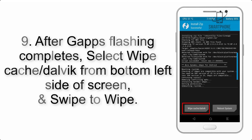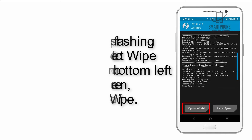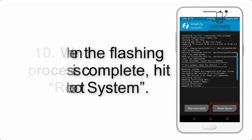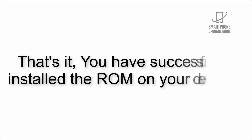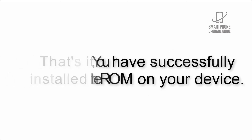Step 9: After gapps flashing completes, select Wipe Cache and Dalvik from the bottom left side of the screen and swipe to wipe. Step 10: When the flashing process is complete, hit Reboot System. That's it — you have successfully installed the ROM on your device.